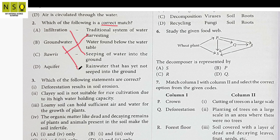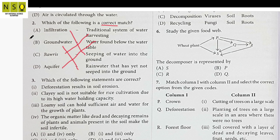Groundwater is water that has not seeped into the ground, and an aquifer is water found below the water table — that is, water stored under hard rock between layers of hard rock. These are the correct matches, and the correct option is Option B.